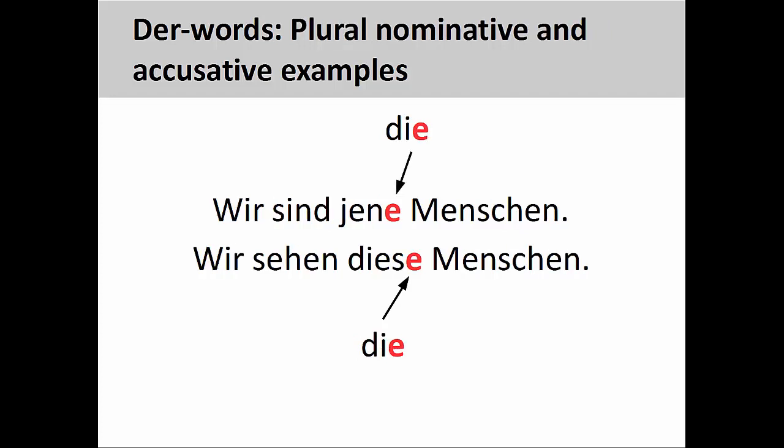Now let's take a look at the plural forms. In the first sentence, wir sind jene Menschen (we are those people), you can see that the -e ending on jen- resembles the plural definite article in the nominative case. And in the second sentence, wir sehen diese Menschen (we see these people), you can see that the -e ending on dies- resembles the plural definite article in the accusative case.